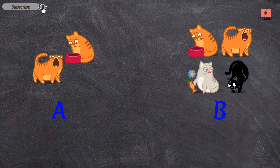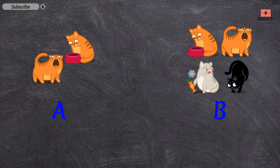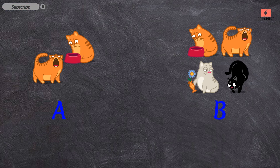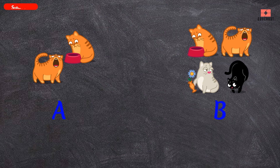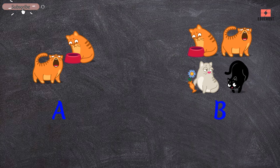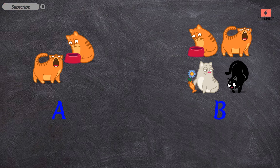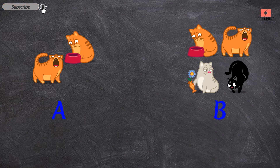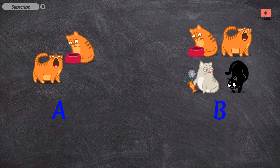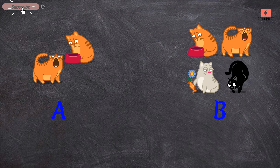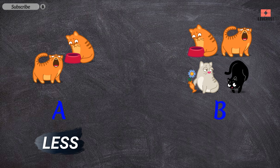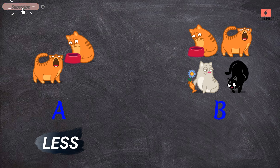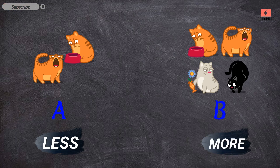A has two cats and B has four cats. So can you tell me which picture has more cats and which picture has less cats? Yes, you are right! A has less cats and B has more cats.